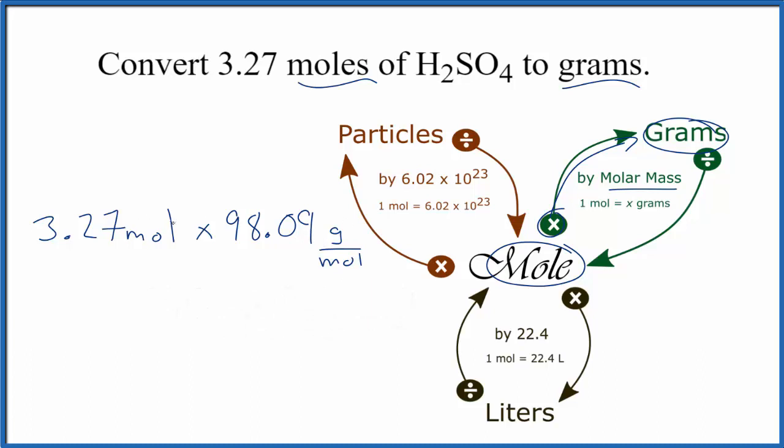So when we multiply, we have moles on top and the bottom. Moles cancels out. That leaves us with grams. That's what we're looking for, so we know we've set this up correctly. We multiply and we get 320.75 grams.